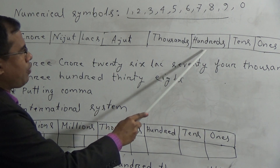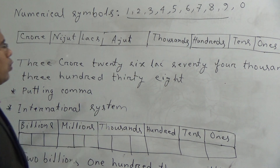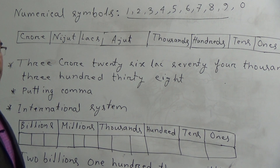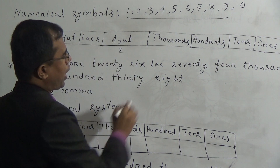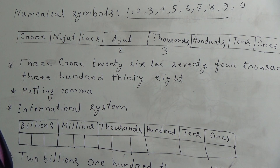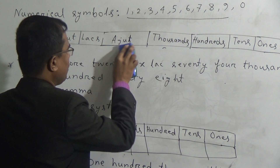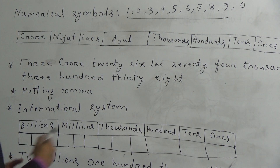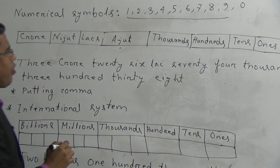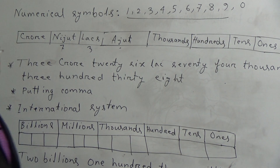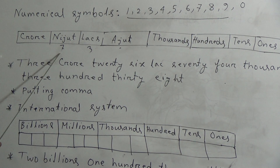The digits of the 1000s place, we normally take together and read as thousands. That means, if we take 2 in the ten-thousands place and 3 in the 1000s place, we will not read 2 ten-thousands and 3 thousands. Rather, we will say 23,000. Similarly, the digits of the lakh and ten-lakh places, we take together and read as lakhs. For example, if we take 7 in the ten-lakhs place and 3 in the lakhs place, we read it as 73 lakhs.